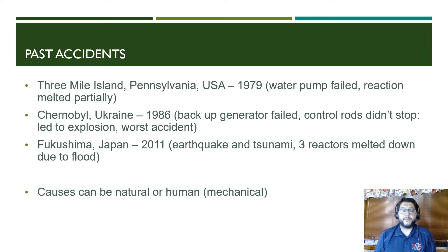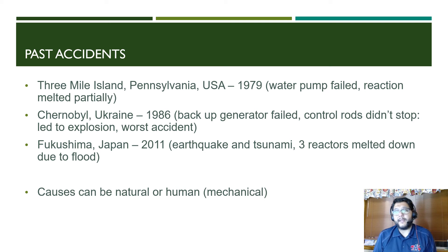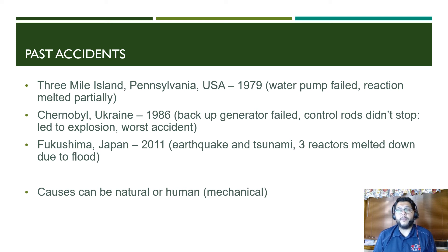Fukushima was the most recent major accident — an earthquake and tsunami caused a flood in three of the reactors. These accidents can be caused by nature, such as an earthquake or tsunami, or by human and mechanical errors, or simply because it may be too difficult to upkeep some of these facilities.